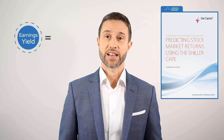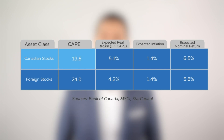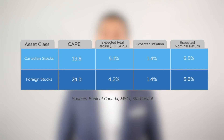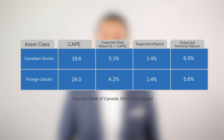We can obtain an earnings yield for any given stock market by taking the inverse of its CAPE ratio, which simply means dividing one by the CAPE. This can be thought of as the stock market's expected real return. And as these are real return expectations, we'll still need to add in our 1.4% inflation expectation so you can compare them to the future notional returns reported on your investment account statements. As of June 30th, 2020, Canadian stocks had a CAPE of 19.6. Dividing one by the CAPE gives us an expected real return of 5.1%, or an expected nominal return of 6.5%, after adding in our 1.4% expected inflation. Foreign stocks had a CAPE of 24. Dividing one by the CAPE gives us an expected real return of 4.2%, or an expected nominal return of 5.6%, after adding in our 1.4% expected inflation.